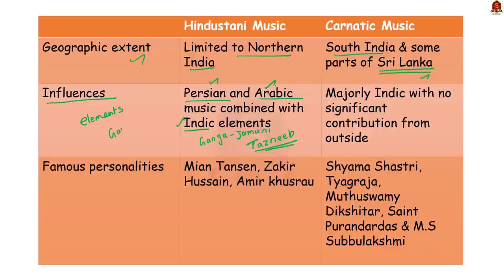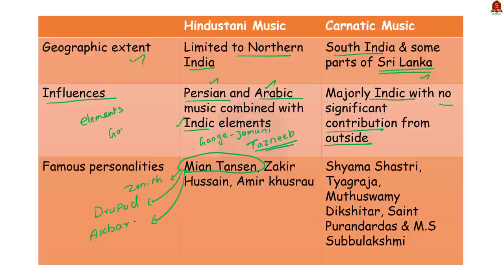Carnatic music is simply of Indian origin, without much external influence. Among famous musicians, Mian Tansen was a flag bearer of Hindustani music — it was at his time that Hindustani music reached its zenith. He was famous for his Dhrupad style of singing and sang in Mughal Emperor Akbar's court. The famous personality of Hindustani music presently is Zakir Hussain. On the other hand, Carnatic music evolved due to the efforts of Shyama Shastri, Thyagaraja, Muthuswami Dikshitar, and Saint Purandaradasa. The famous M.S. Subbulakshmi was also a Carnatic singer.